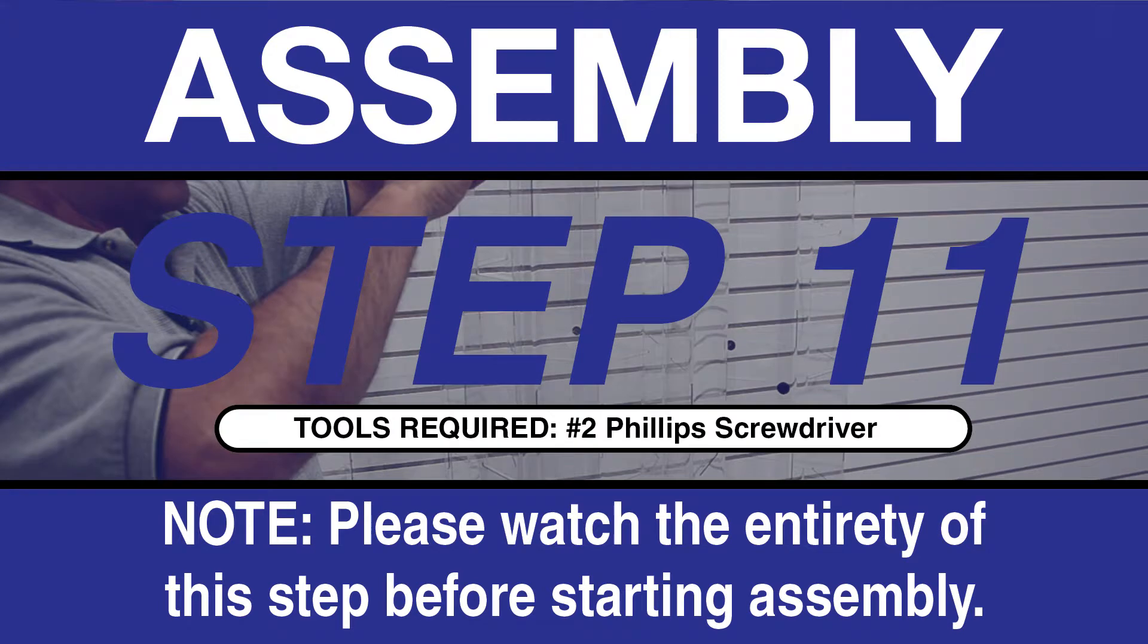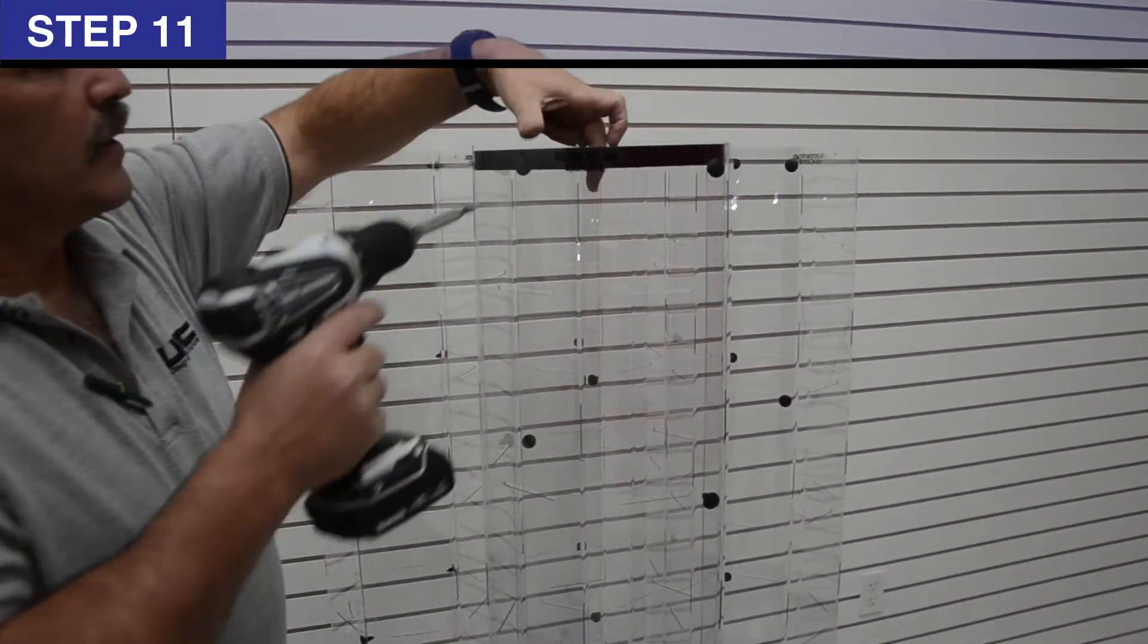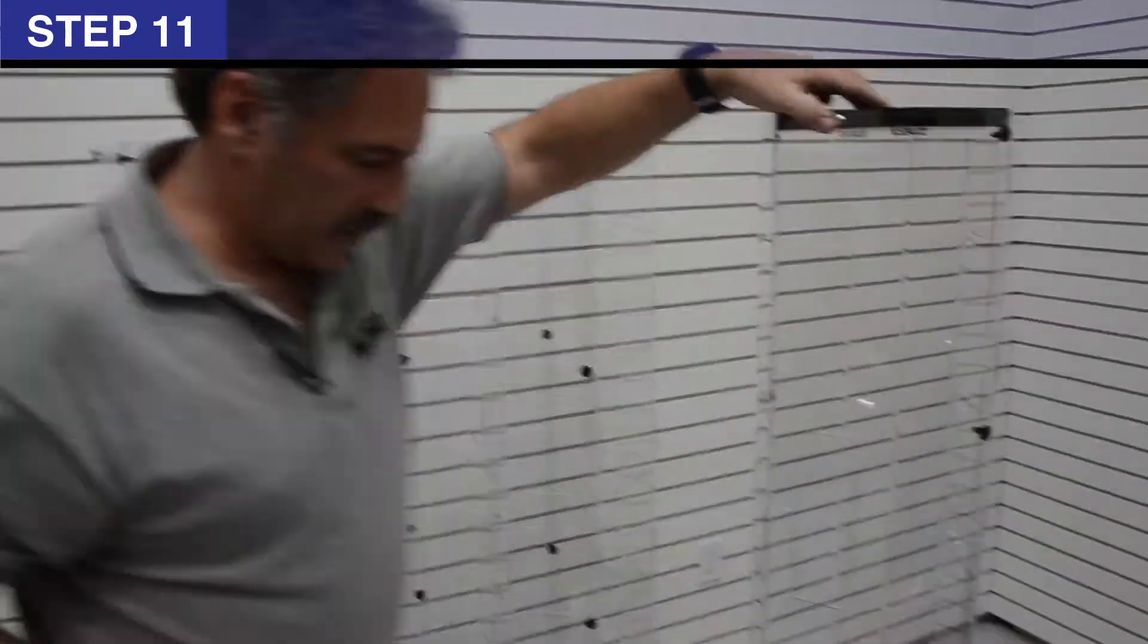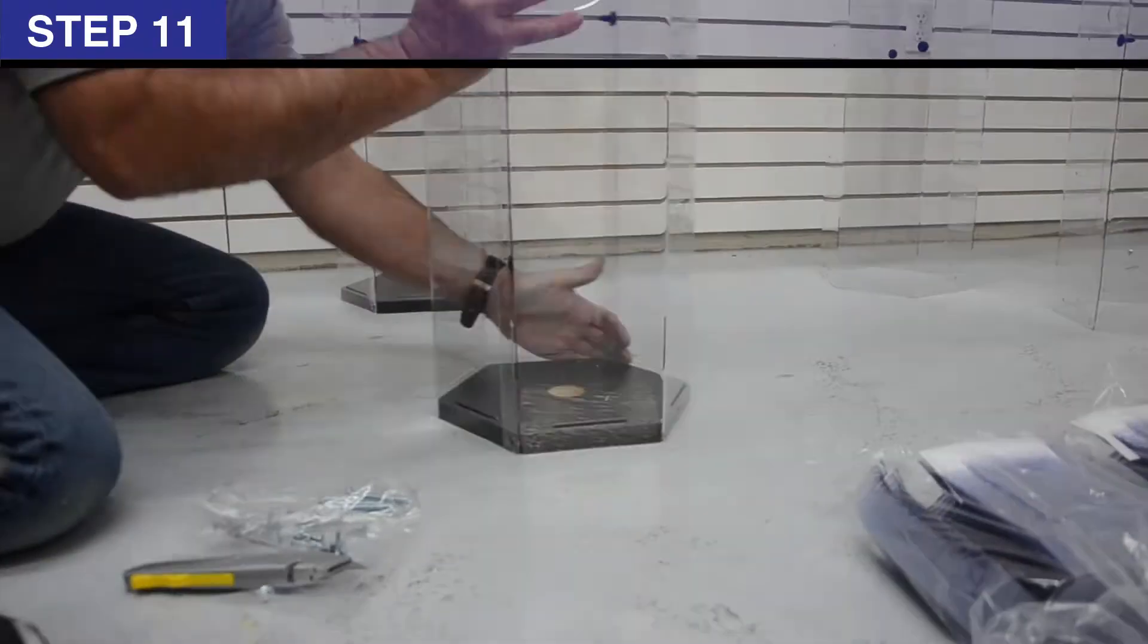Step 11: Attach tower cap L onto tower side panel assembly M using 2, 3/4 inch truss head screws I. Repeat steps 7 through 11, 3 more times to complete tower assembly.